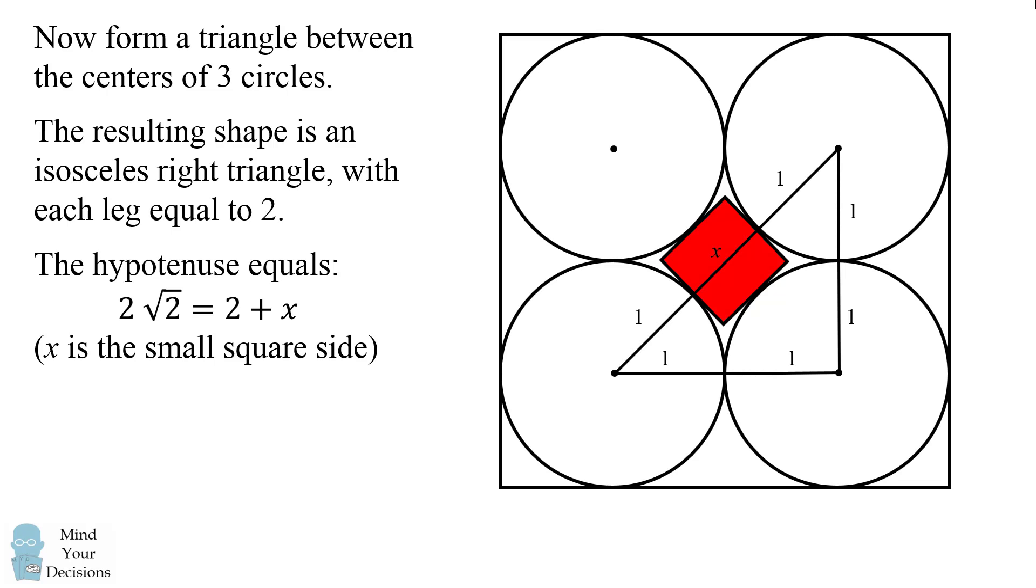So we now have two different ways to measure the hypotenuse. On the one hand it's equal to two square root of two, and on the other hand it's equal to two plus x where x is the small square side length.